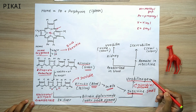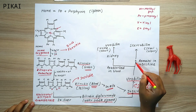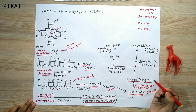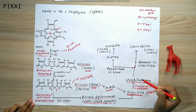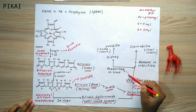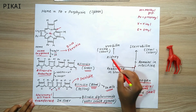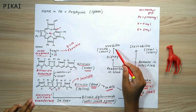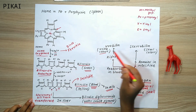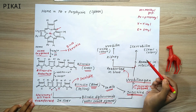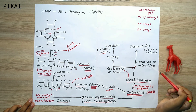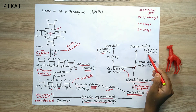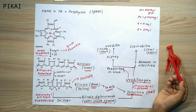Urobilinogen in the intestine gets reabsorbed into the bloodstream and follows two pathways. Some urobilinogen travels to the kidney, where it is converted into urobilin, which gives urine its yellow color. The remaining urobilinogen stays in the intestine and is converted into stercobilin, which gives stool its reddish-brown color.